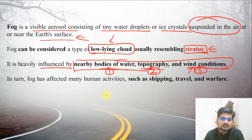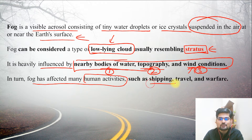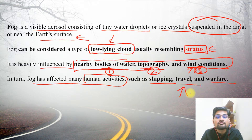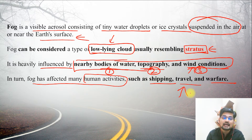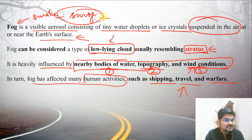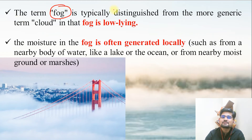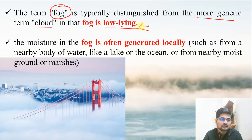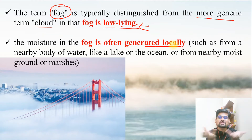These three factors are very important, and fog has affected many human activities. Activities like shipping, traveling, and warfare are all affected by fog conditions. Specifically, we have lots of road accidents in winter because of foggy conditions and poor visibility. When fog mixes with smoke, it also forms smog, which is hazardous. That's why fog is very important to study. Fog is typically distinguished from the more generic term cloud — fog is a low-lying cloud, and its moisture is often generated locally.